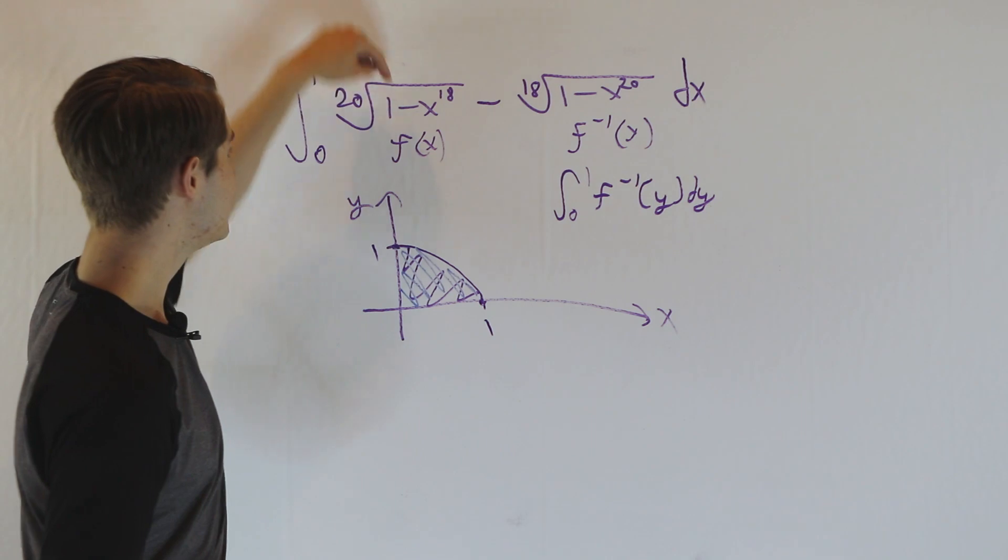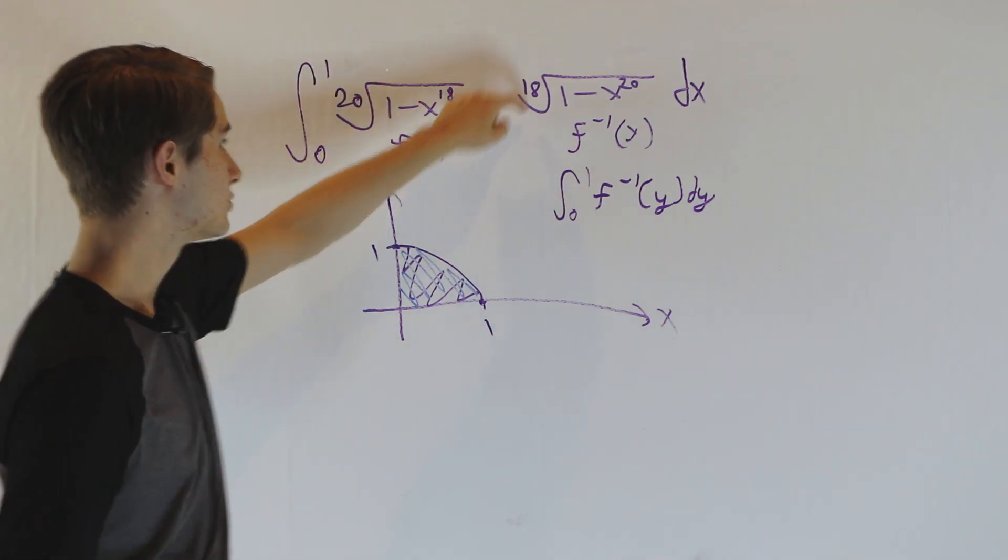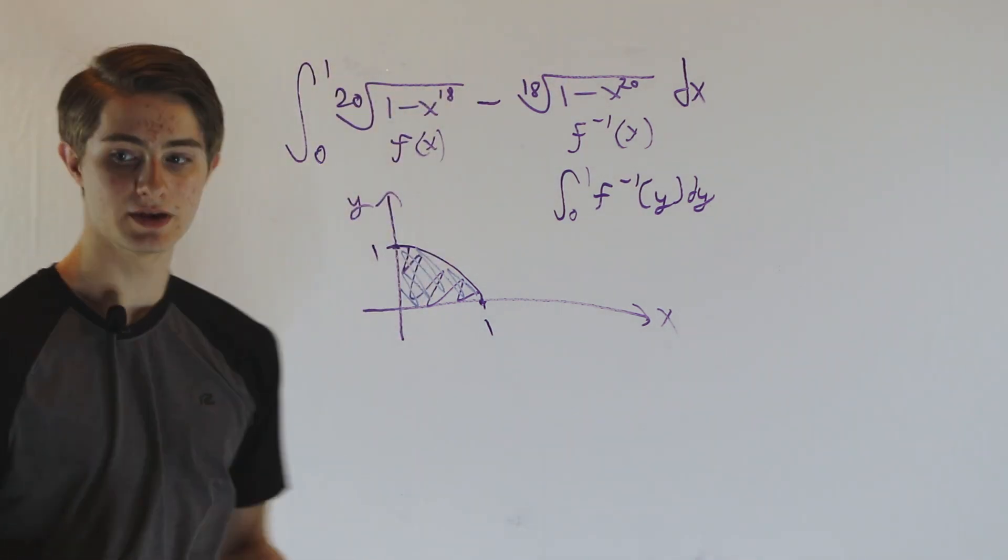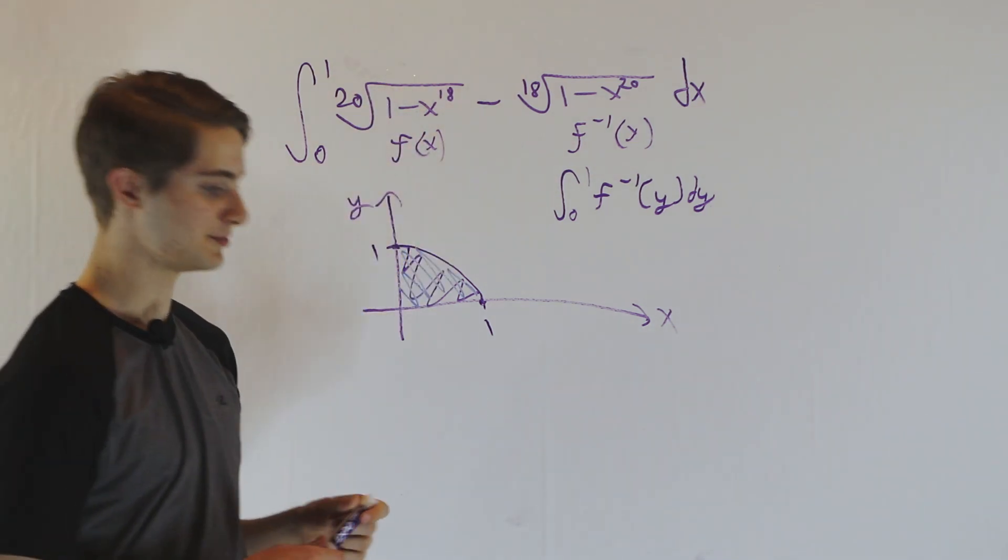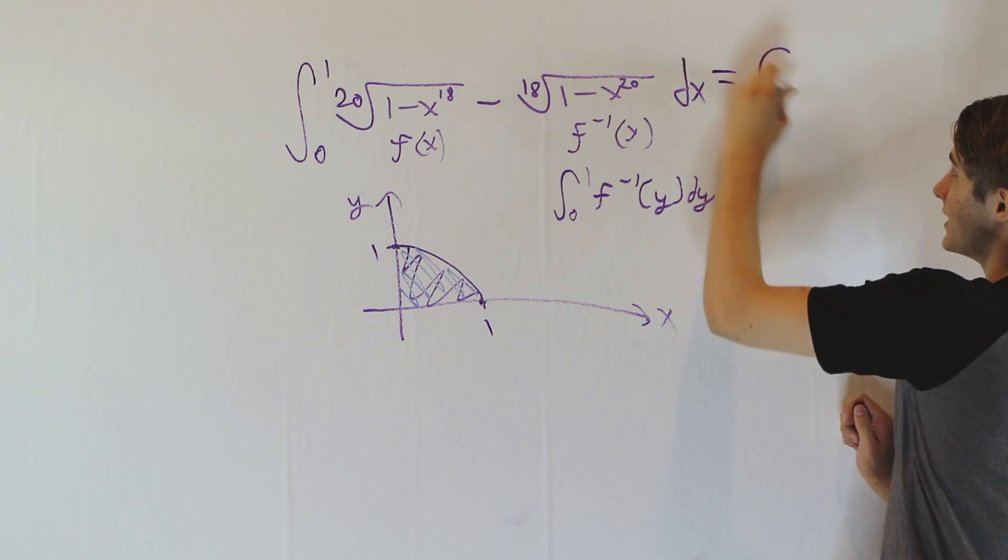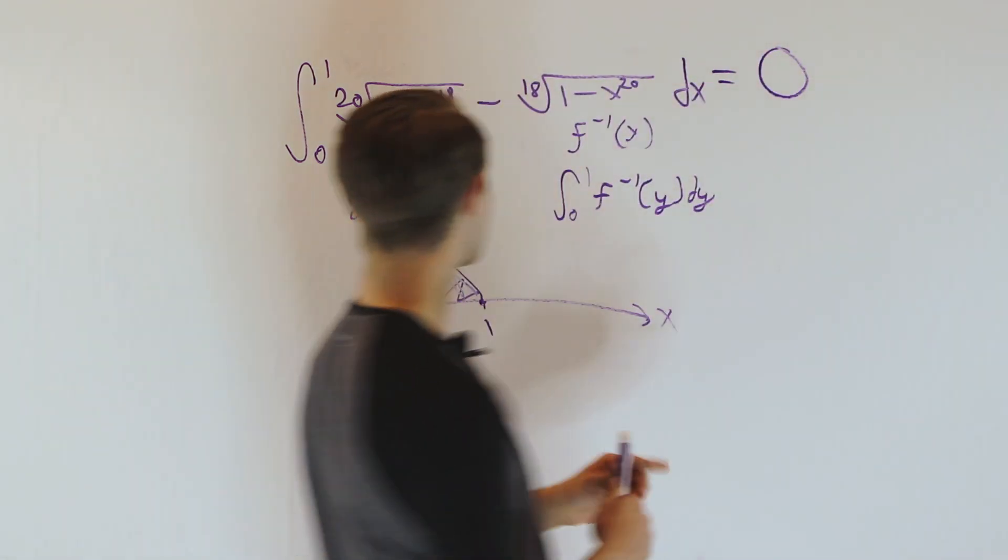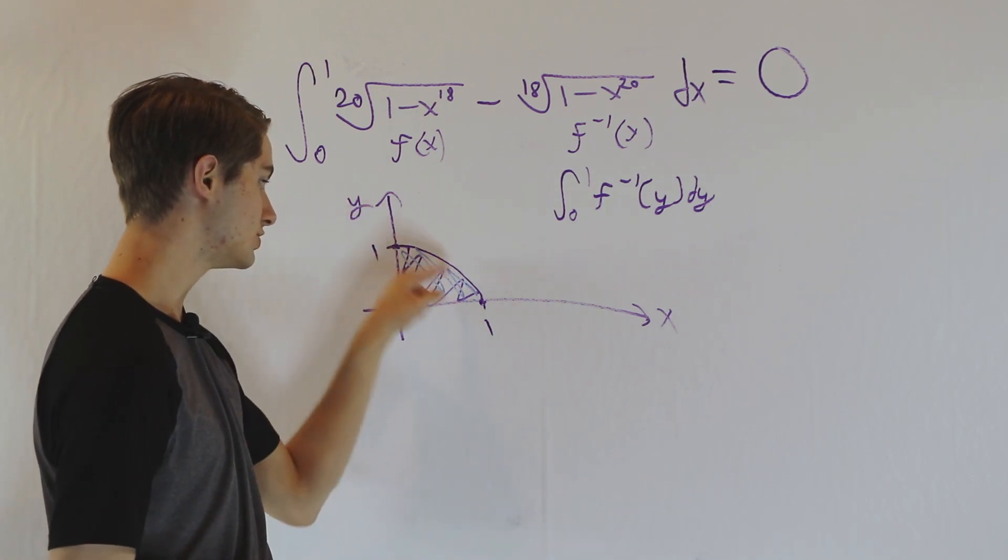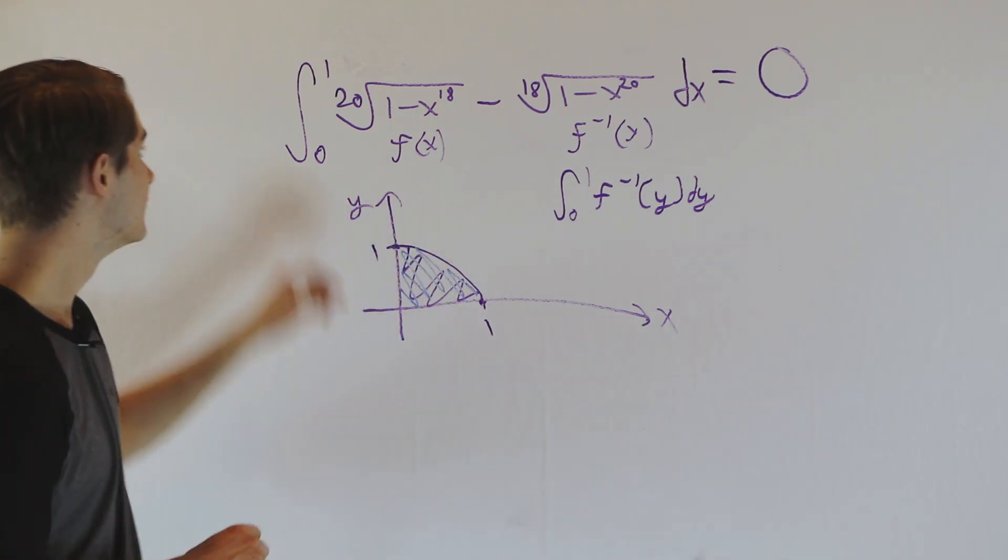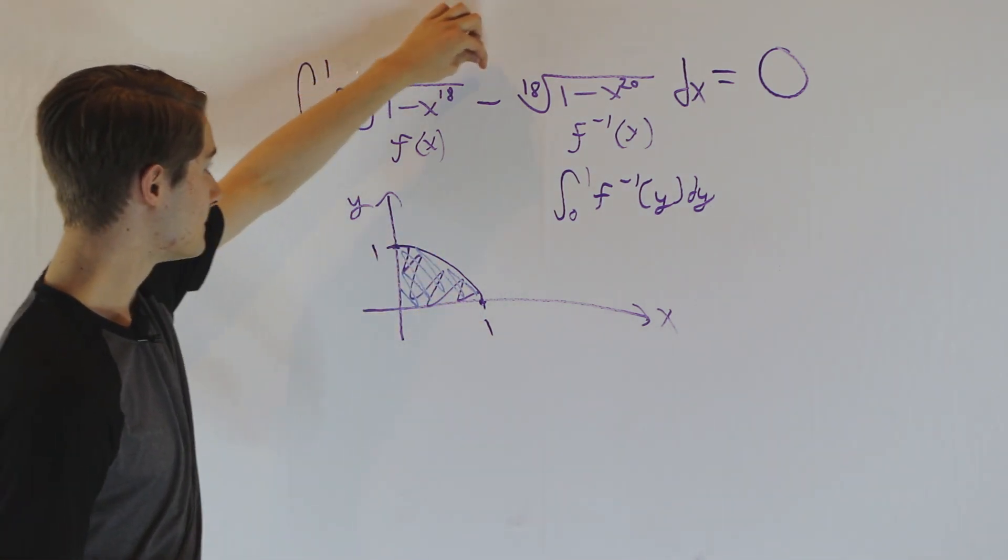So we're taking some area value and subtracting the same thing. What do we get if we take something and subtract it from itself? Well, the only answer we could get is 0. So in fact, because these two functions are inverses and because of the way that curve is shaped between 0 and 1, the integral of this minus this is just going to give us 0.